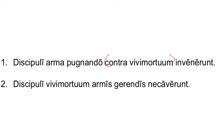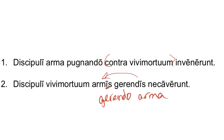Now, let's look at our next sentence: Discipuli vivi mortuum armis gerendis necaverunt. The students killed the zombie. How did they kill the zombie? By bearing arms. So we could have said gerendo arma — by bearing arms — with arma as a direct object of the gerund, but Latin doesn't like that. Instead, they take that gerund with a direct object and convert it into an ablative noun with a matching gerundive to modify it. So instead of taking arma as accusative, they turn armis into the ablative and modify it with a matching gerundive. There you have it: the gerund-gerundive flip-flop, a dead Latin teacher, a dead zombie, and lots of brave students.